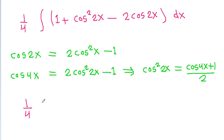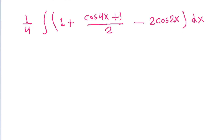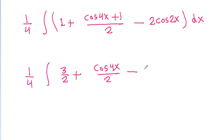So it is (1/4) times the integral of (1 + cos²2x minus 2 cos 2x) dx. Substituting cos²2x, we get (1/4) times the integral of (1 + 1/2 + cos 4x / 2 minus 2 cos 2x) dx, where 1 + 1/2 gives 3/2.